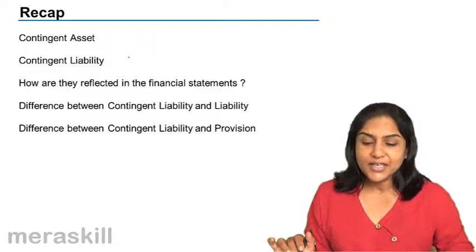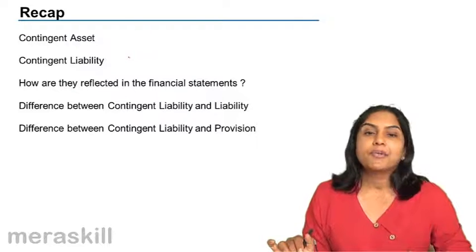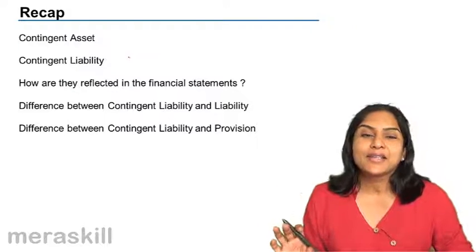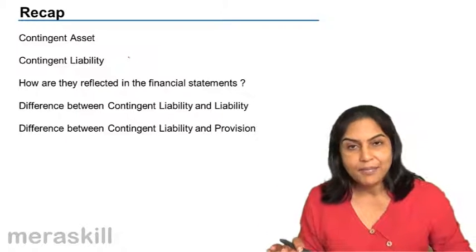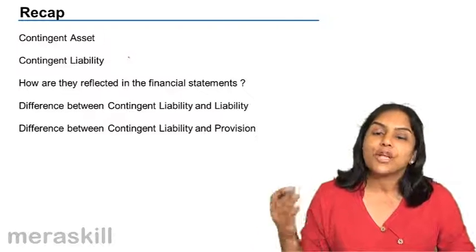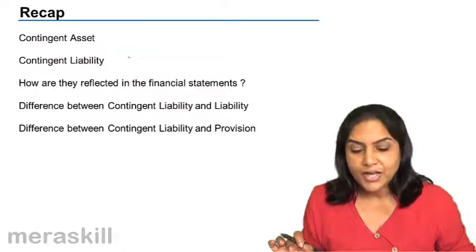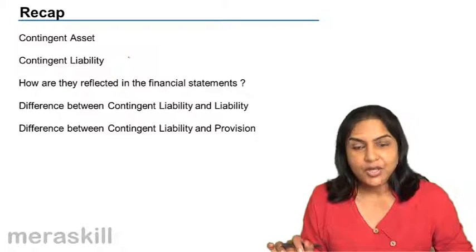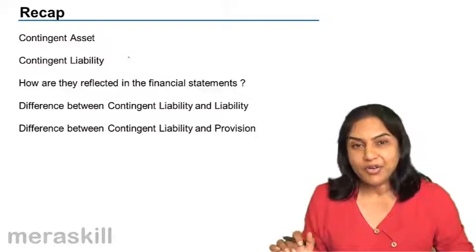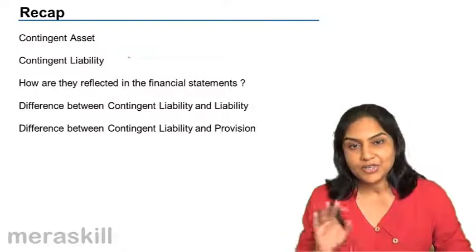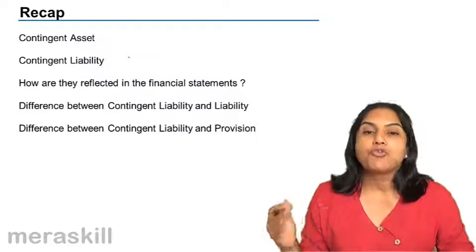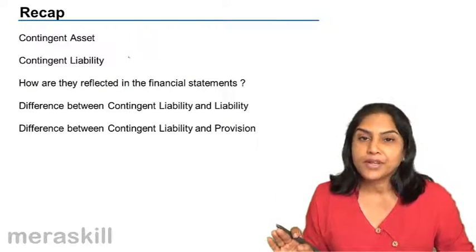As far as a contingent liability and provision is concerned: a provision is actually a present obligation where the amount is uncertain but can reasonably be estimated. A contingent liability, on the other hand, is a probable obligation which may arise only on the happening of some future event. It could also be a present obligation, but one where the amount of liability cannot in any way be reasonably estimated, or where the outflow of resources for settlement would not be required.